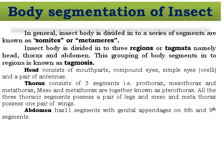Insect body segmentation is divided into three series of segments, known as somites or metamers. The insect body is divided into three regions or tagmata, namely head, thorax, and abdomen. This grouping of body segments into a region is known as tagmosis — the grouping of body segments into distinct regions.